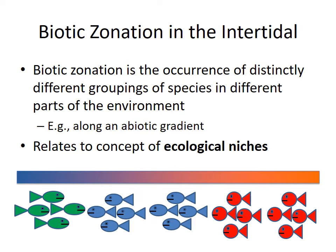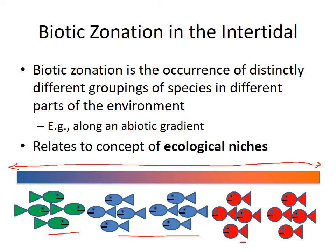Now let's talk about the patterns of life that result in response to those physical gradients — what we call biotic zonation. These are distinctly different groupings of species in different parts of the environment. In different zones of different conditions you have different sets of organisms.